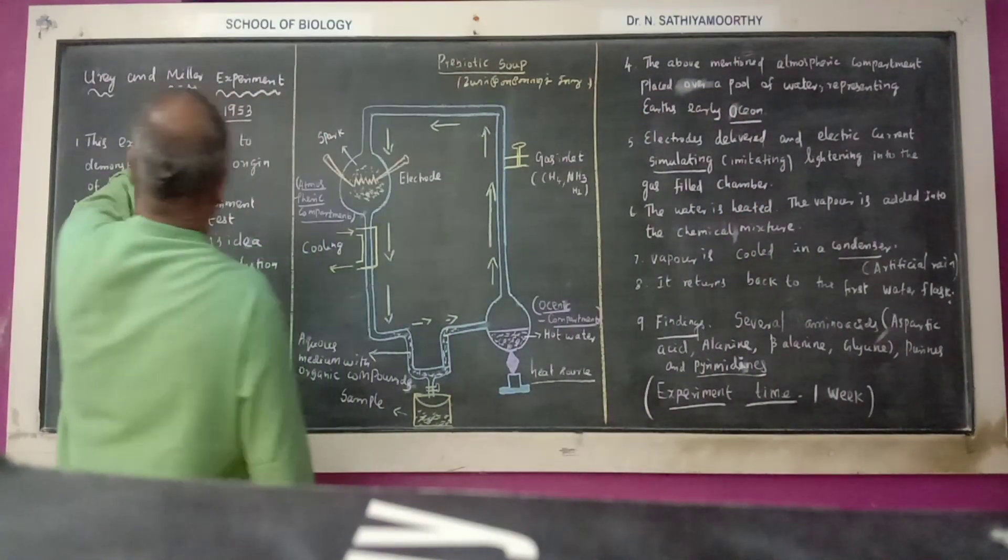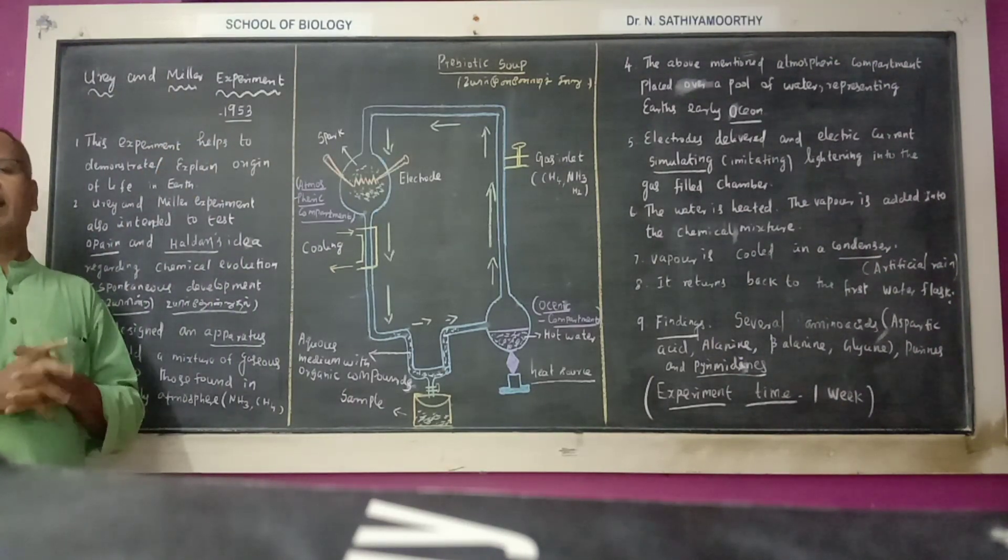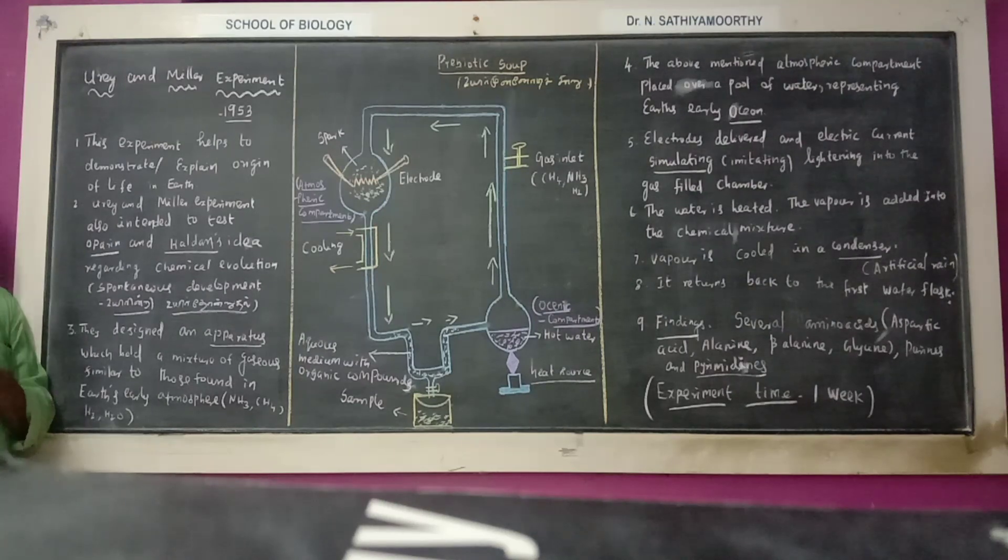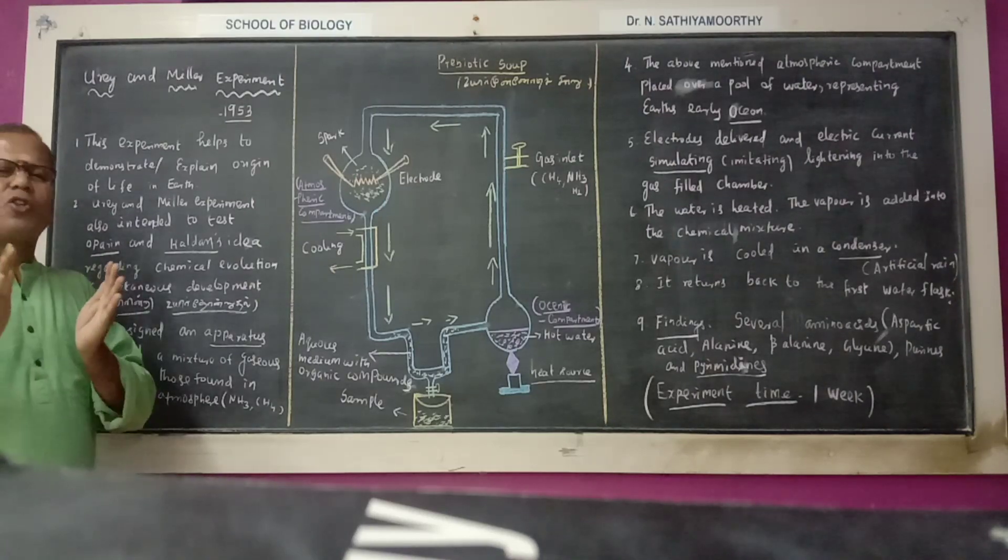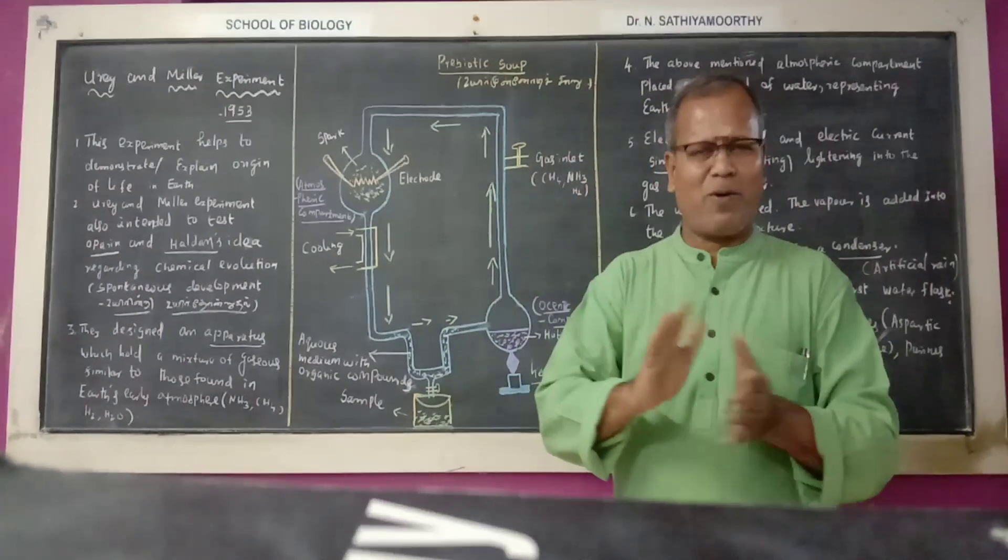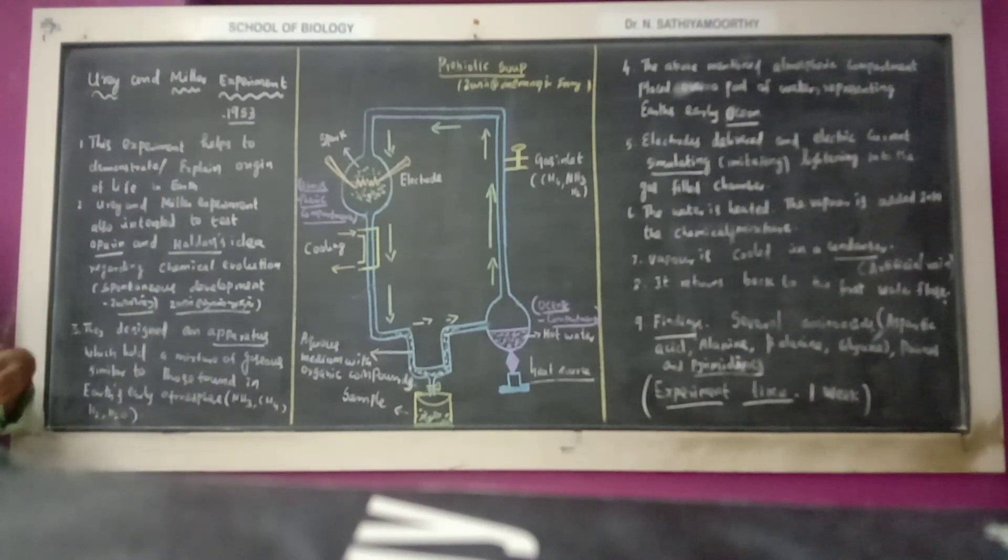Urey and Miller, both scientists of Chicago University, and this Urey-Miller experiment helps to demonstrate or help to explain the origin of life on Earth. Actually, this experiment is also intended to test Oparin and Haldane's idea.